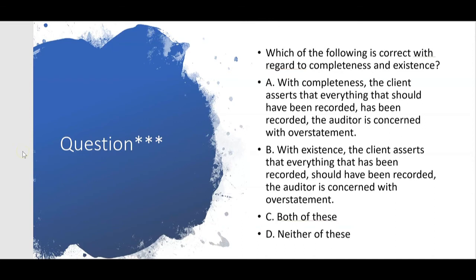Let's try another question: which of the following is correct with regard to completeness and existence? A says: with completeness, the client asserts that everything that should have been recorded has been recorded, and the auditor is concerned with overstatement. The first part about completeness is right, but the auditor is concerned with understatement — not overstatement — with completeness. B says: with existence, the client asserts that everything that has been recorded should have been recorded, and the auditor is concerned with overstatement. Yes, that looks right — I like B.